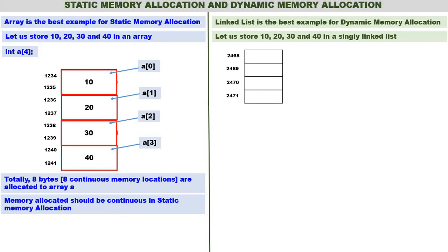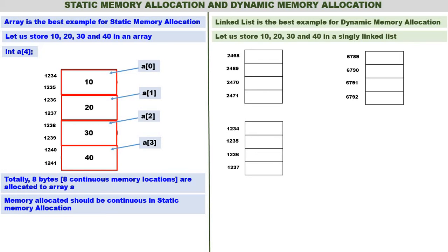Here are four memory locations at 2468–2471; four more at 6789–6792; four at 1234–1237; and another four at 3456–3459. These four chunks are taken from different parts of memory — they are not continuous.